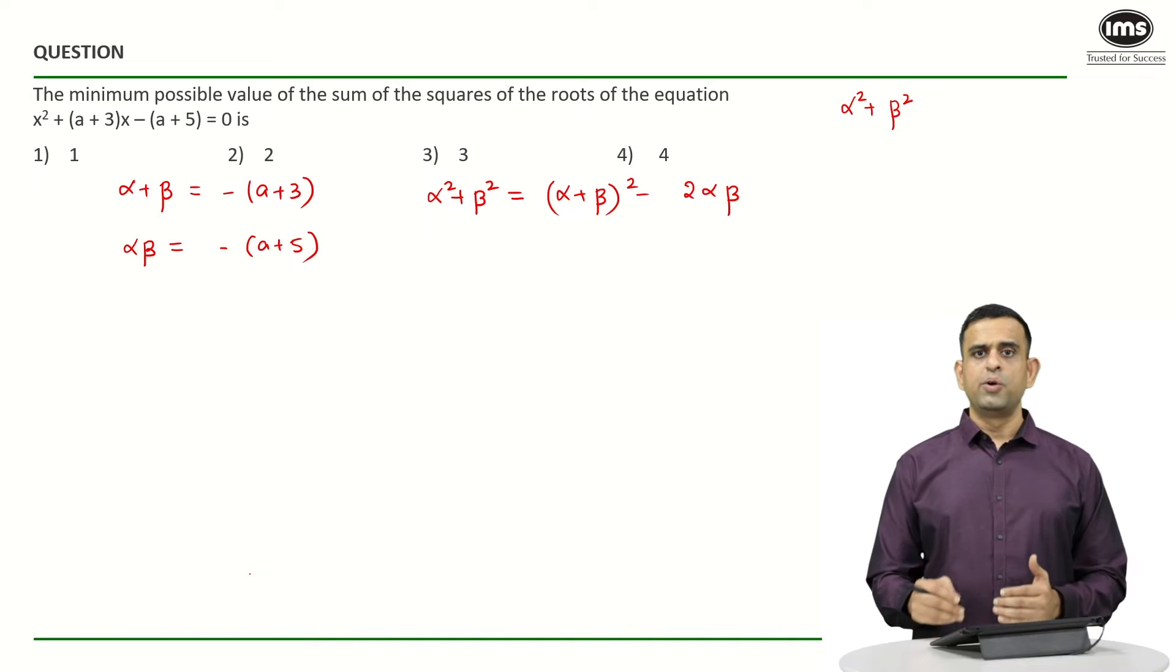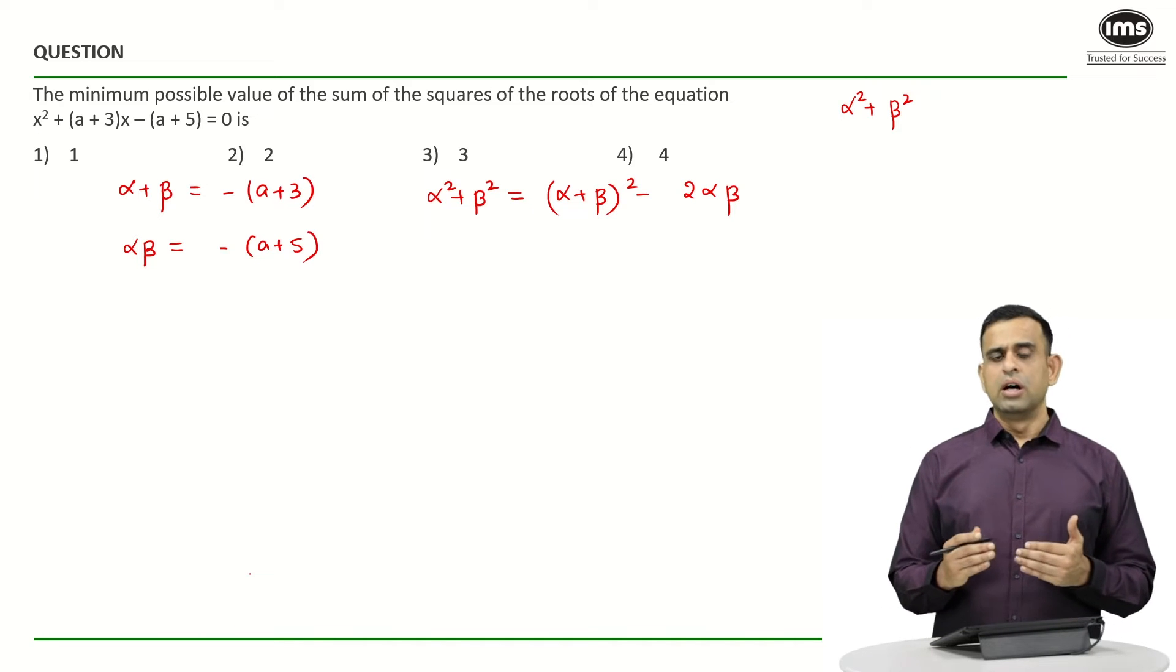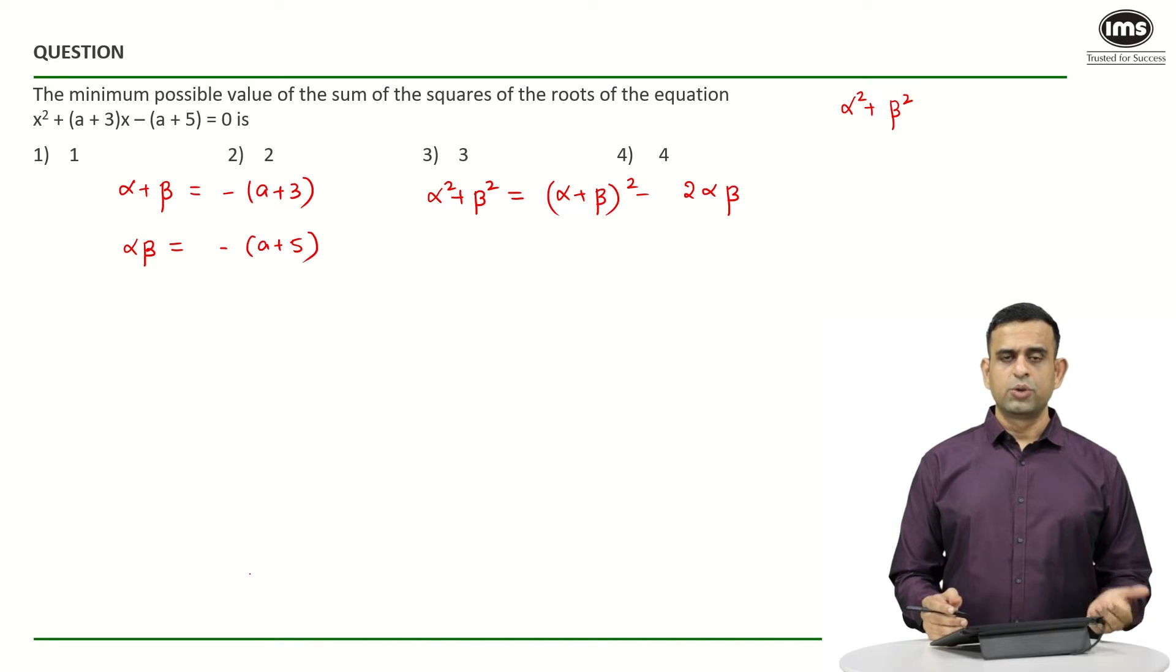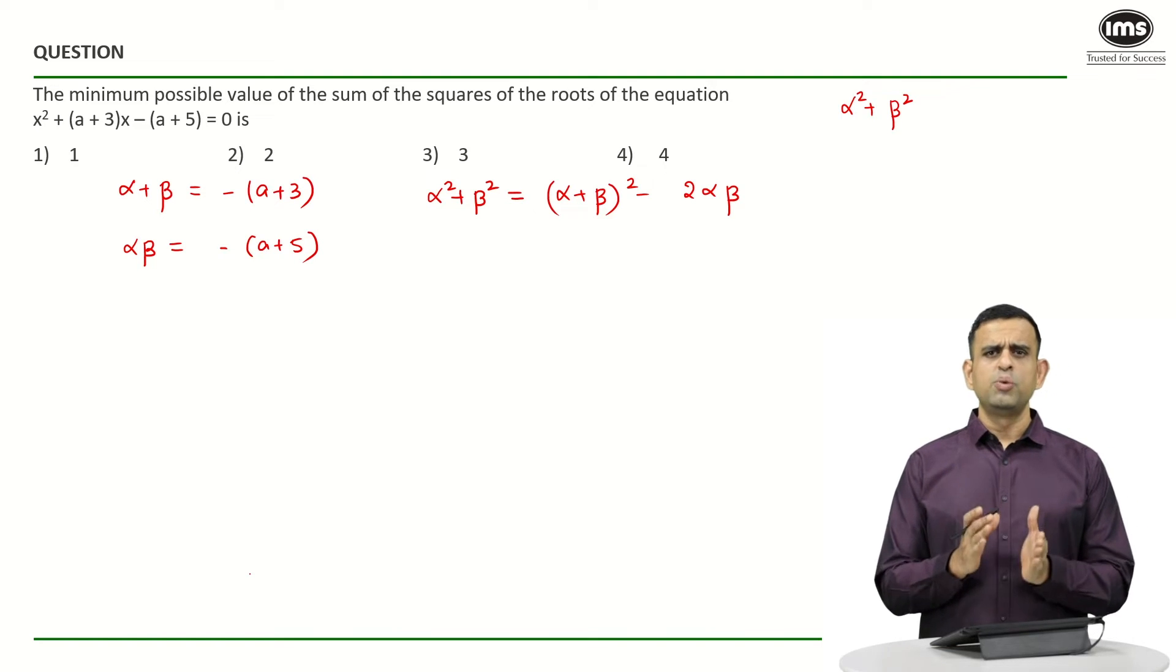So what will happen after this? We are going to find out some relation of α² + β² in the form of a, which is going to be most likely a quadratic since we have a square term there.